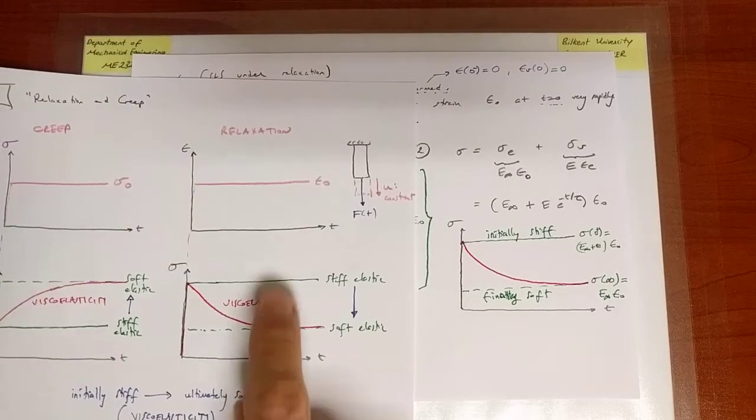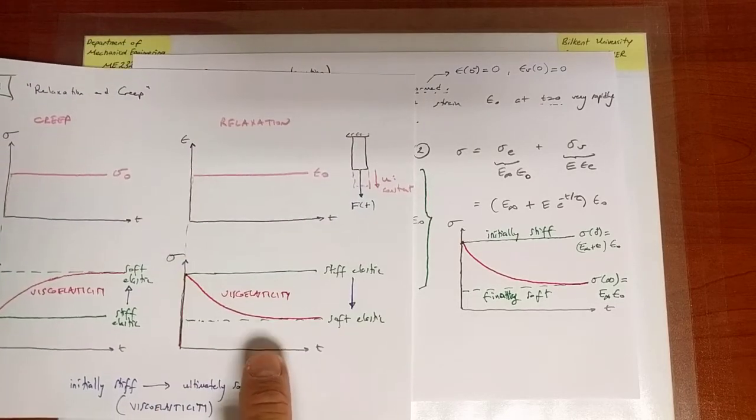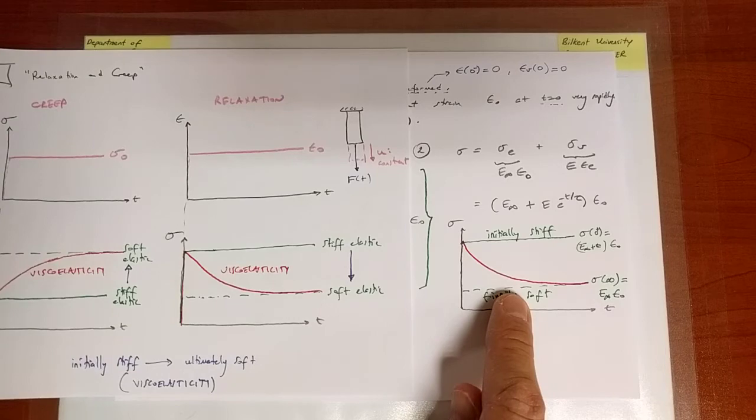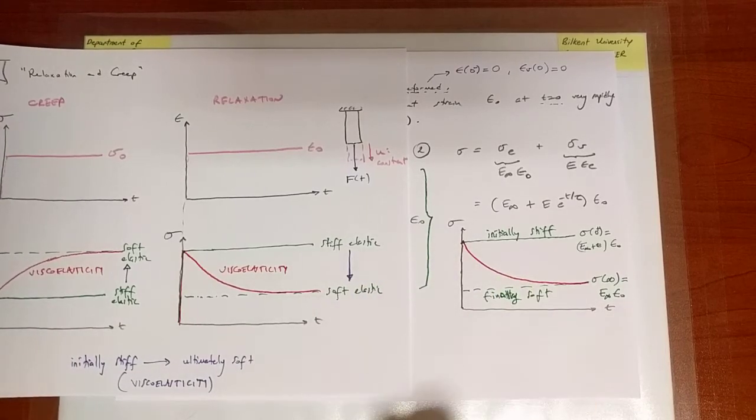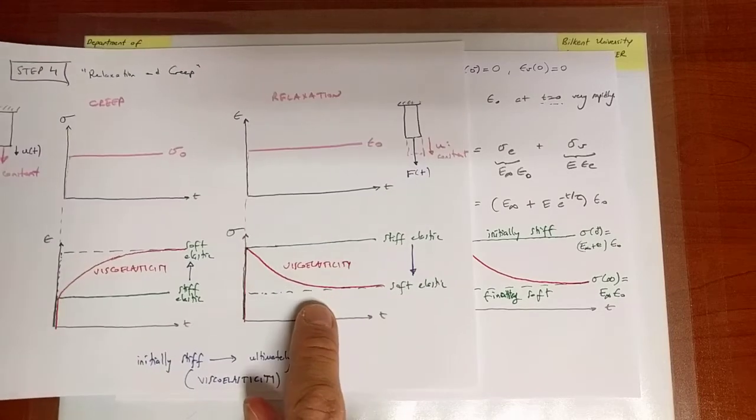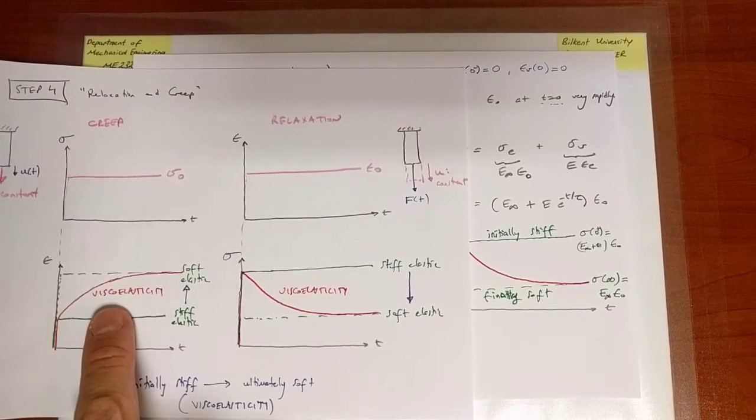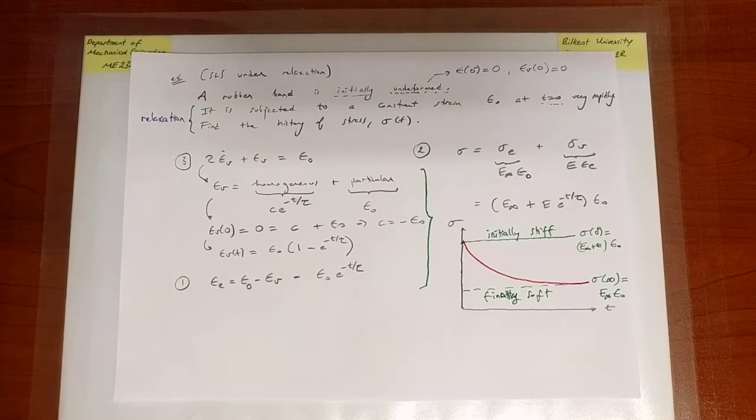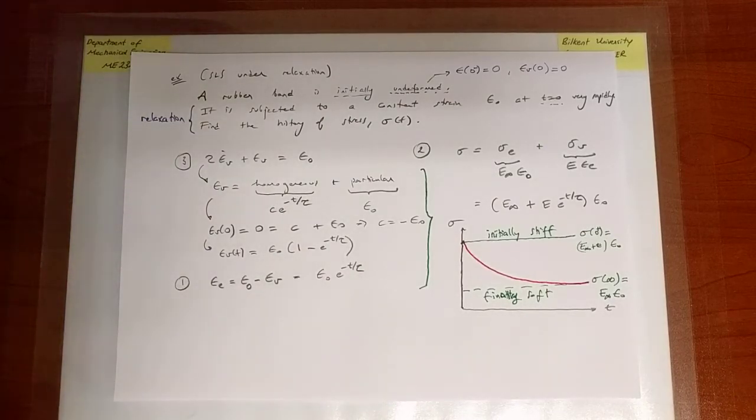And this type of behavior is exactly what we observed, let me remind you with an earlier slide, in a relaxation experiment. And now that's what we also observe. So the SLS model is a good model because it can reproduce this. It turns out if you test it with creep, it also displays a behavior that's similar to that. That is left for your exercise.